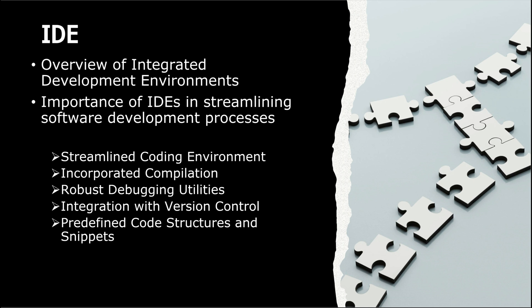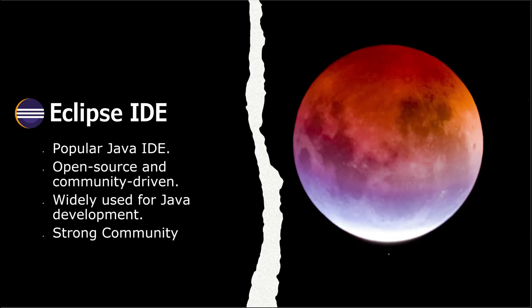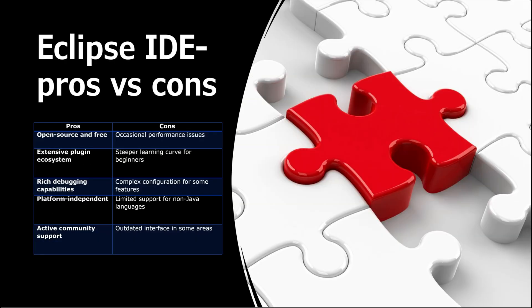Those are some of the major features and advantages of an IDE. Now let's begin with Eclipse. Eclipse is an open-source IDE famous for its adaptability — it can integrate with databases, APIs, and more through its extensive plugin system. It's a top choice for developers, and its features include code compilation, refactoring capabilities, and plugin support. Eclipse has a strong community and a successful ecosystem for updates.